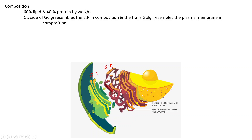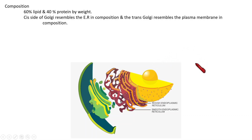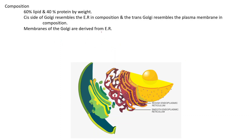The membrane composition of the cis Golgi is the same as that of the endoplasmic reticulum, while the trans Golgi's composition is the same as that of the plasma membrane. The membranes of the Golgi are derived from the endoplasmic reticulum.